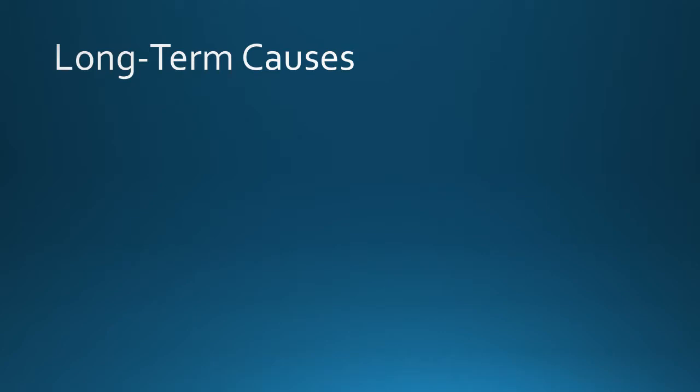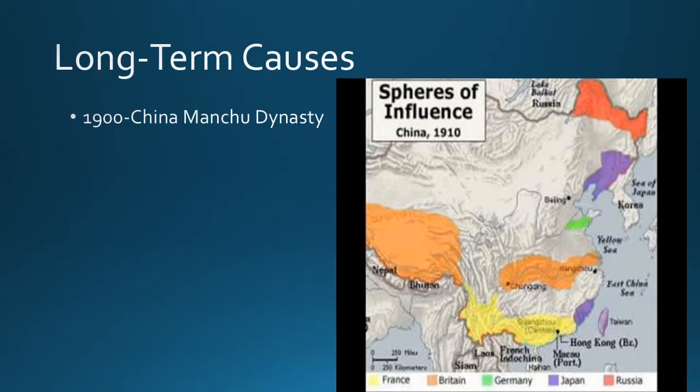The first thing we want to look at are the long-term causes of the Chinese Civil War. Our biggest starting point would be the late 1800s into the early 1900s when China was being ruled by a dynasty known as the Manchu Dynasty. During this dynasty, life for Chinese peasants was very tough. The vast majority of the population were peasants farming in the countryside. They paid an extraordinary amount in rent, had little to no land, and faced high levels of famine — really tough conditions.